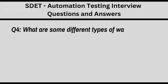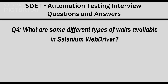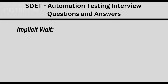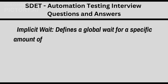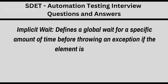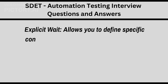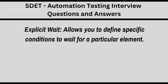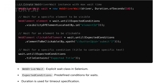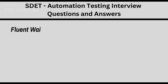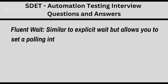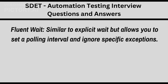Q4: What are some different types of waits available in Selenium WebDriver? Implicit wait defines a global wait for a specific amount of time before throwing an exception if the element is not found. Explicit wait allows you to define specific conditions to wait for a particular element. Fluent wait is similar to explicit wait but allows you to set a polling interval and ignore specific exceptions.